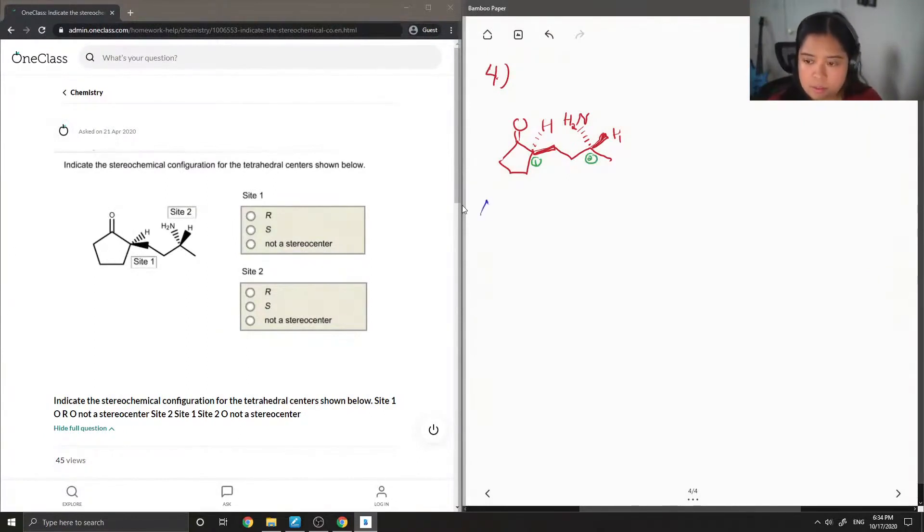Okay, so assigning R or S configuration. These are the kind of steps that you would take. The first one is to assign priority.